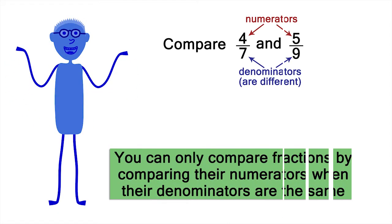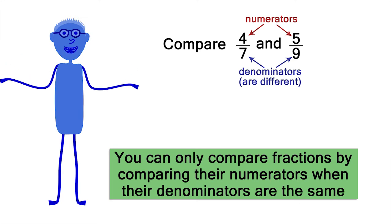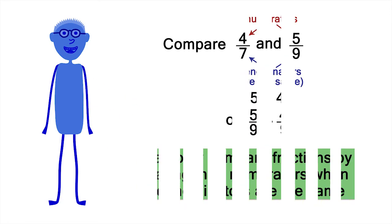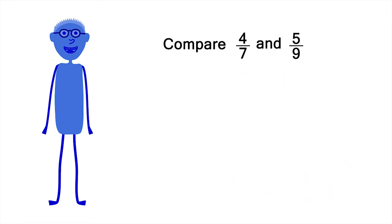The problem is we can only compare fractions directly by comparing their numerators when their denominators are the same. For example, 5 ninths is bigger than 4 ninths.